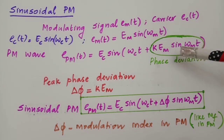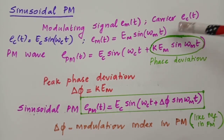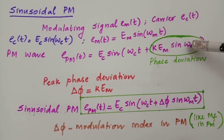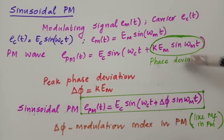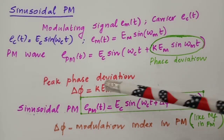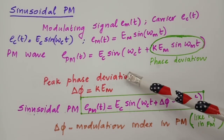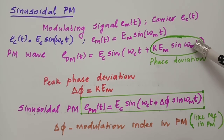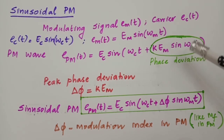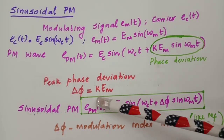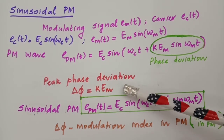This term K·E_M sin(ω_M t) is what we define as phase deviation — similar to how we defined frequency deviation in FM modulation. The peak phase deviation is obtained when sin(ω_M t) = 1, its maximum value. At that point, the phase deviation becomes K·E_M. So the peak phase deviation, φ_m, is given by K·E_M.